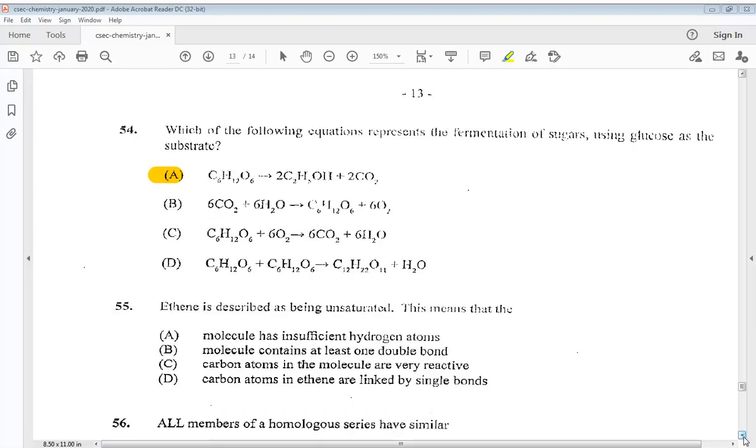Question 55 says ethene is described as being unsaturated. This means that A molecule has insufficient hydrogen atoms, B molecule contains at least one double bond, C carbon atoms in the molecule are very reactive, or D carbon atoms in ethene are linked by single bonds. So the answer is B, molecule contains at least one double bond.